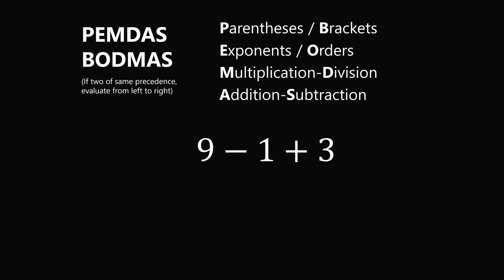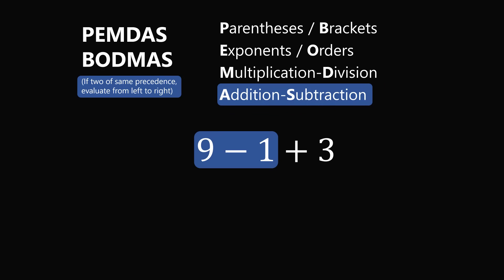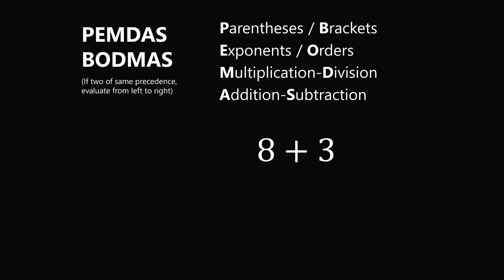We have now simplified the problem into 9 minus 1 plus 3. We have a subtraction and an addition. So in this case, we have two operations of the same precedence, so we will evaluate from left to right. We first do 9 minus 1, which is equal to 8. And finally, we are left with 8 plus 3, which is equal to 11.